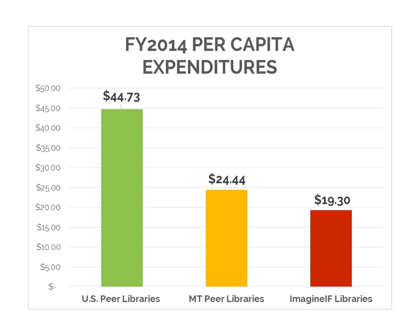The public library data survey shows the average expenditure per capita was about $44.73 in 2014. That same year, our funding at Imagine If Libraries was $19.30. So we are not a large, well-funded library system in a progressive university town — we're definitely an average-sized library system with a pretty conservative populace and limited funding. I brought this up to highlight that you don't need a lot of money to have creative programming. What you do need are planning, clear goals, willingness to work with and for the community, and willingness to take risks.